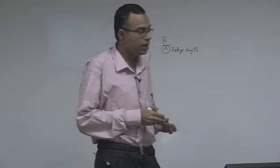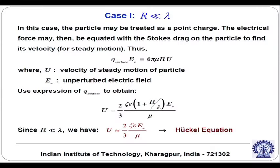We will quickly go to the slide and see what was the consequence. As a consequence, we wrote an expression for the Stokes drag on the particle as a function of the surface charge, and using the expression for surface charge we got an expression for the electrophoretic velocity. Because r is much less than lambda, we got u equal to 2/3 times epsilon zeta E by mu, which is 2/3 times the Helmholtz-Smoluchowski velocity.